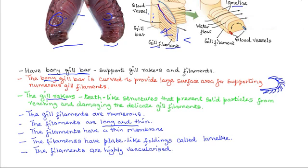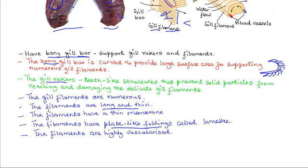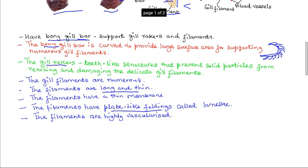Each filament has plate-like foldings known as the lamellae that further increase the surface area for gases exchange. The filaments are also highly vascularized, as shown by their red colour. The red colour proves that they have a rich network of blood capillaries. These blood capillaries carry away the oxygen that has been absorbed and bring carbon dioxide to the surface for diffusion. In this way, the rich supply of blood vessels maintains a steep diffusion gradient between the water and the gill.